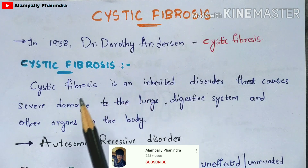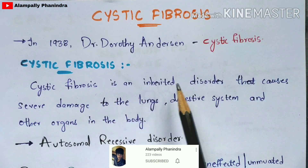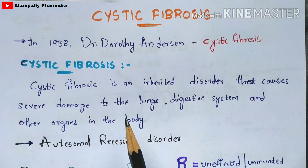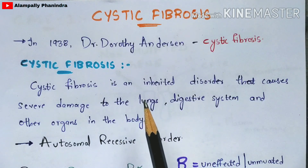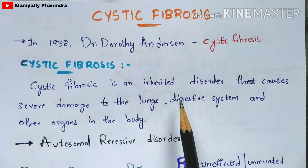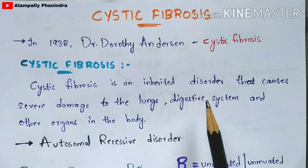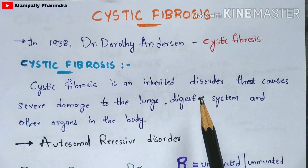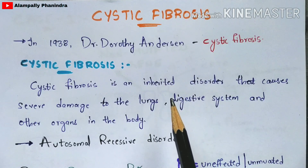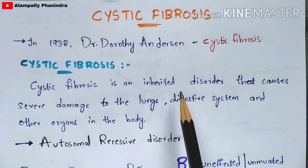Cystic fibrosis is an inherited, genetically inherited disorder that causes severe damage to the lungs, digestive system, and other organs in the body. It shows much effect on the cells — for example, in the lungs it affects respiratory cells, and in the digestive system it affects the acinar cells. Once those cells get damaged, these organs also get damaged and cannot perform their functions properly.